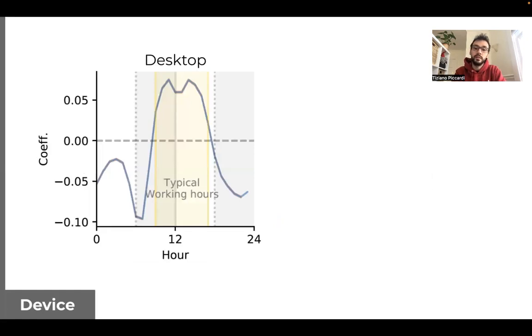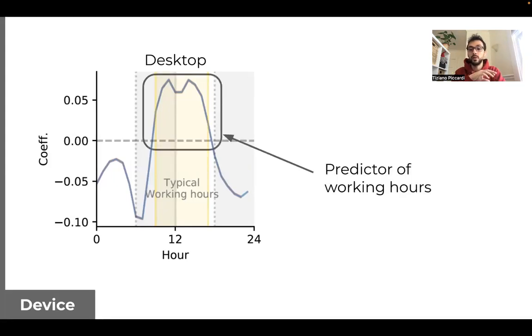So starting from the device feature, we can observe that access from desktop is more common during the day, with desktop being predictor of the working hour.